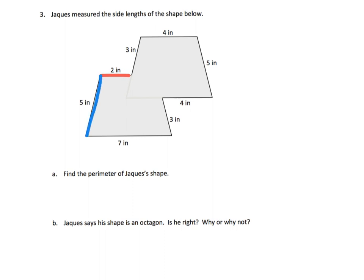So you've got 2 plus 5 plus 7 plus 3 plus 4 plus 5 plus 4 plus 3. So that's one way we could have measured to get the answer, and there's other ways as long as you figure out a way to add and get the total distance around that figure. So the question is, Jaques says his shape is an octagon. Is he right? Why or why not?